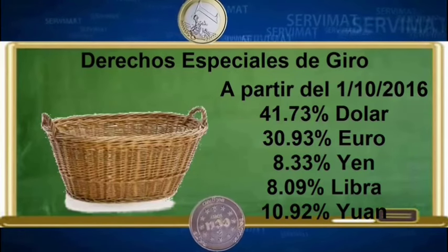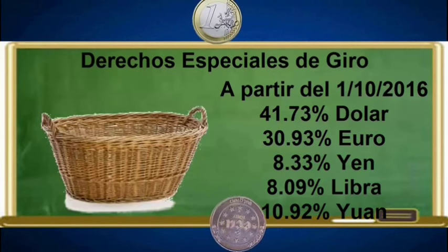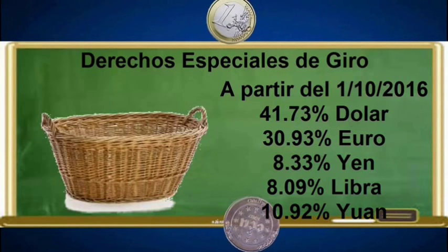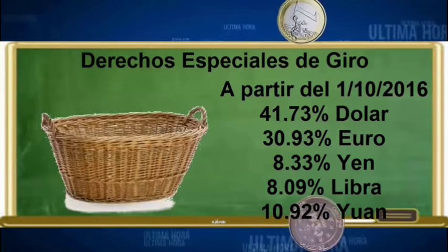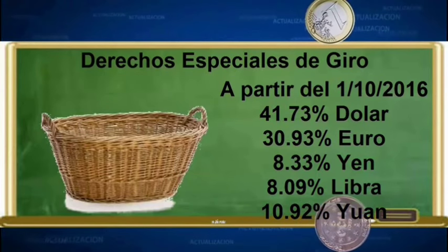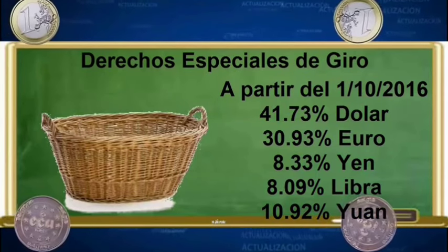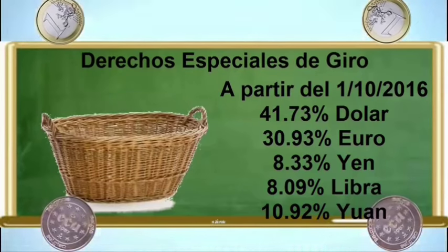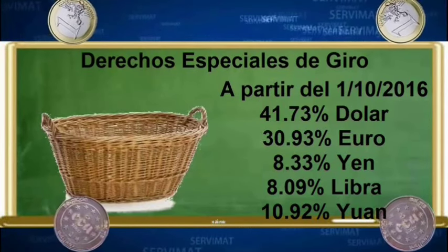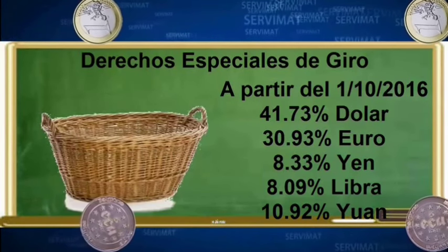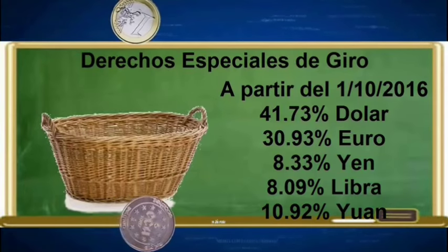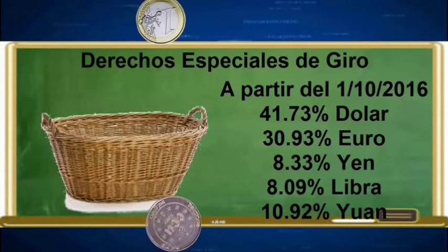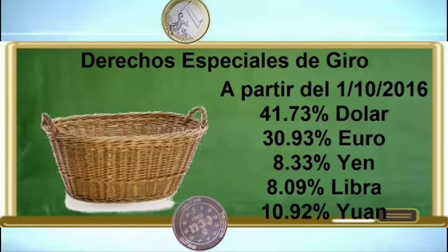La nueva composición a partir del 1 de octubre será: el 41,73% del valor de los derechos especiales de giro estará en función del dólar estadounidense, el 30,93% del euro, el 8,33% del yen japonés, el 8,09% de la libra esterlina, y el 10,92% estará en función del yuan de la China continental.